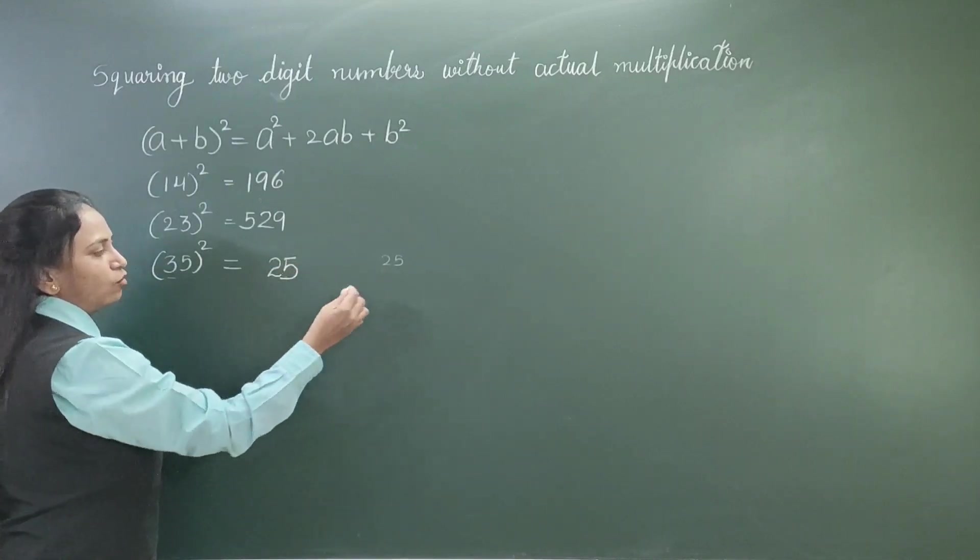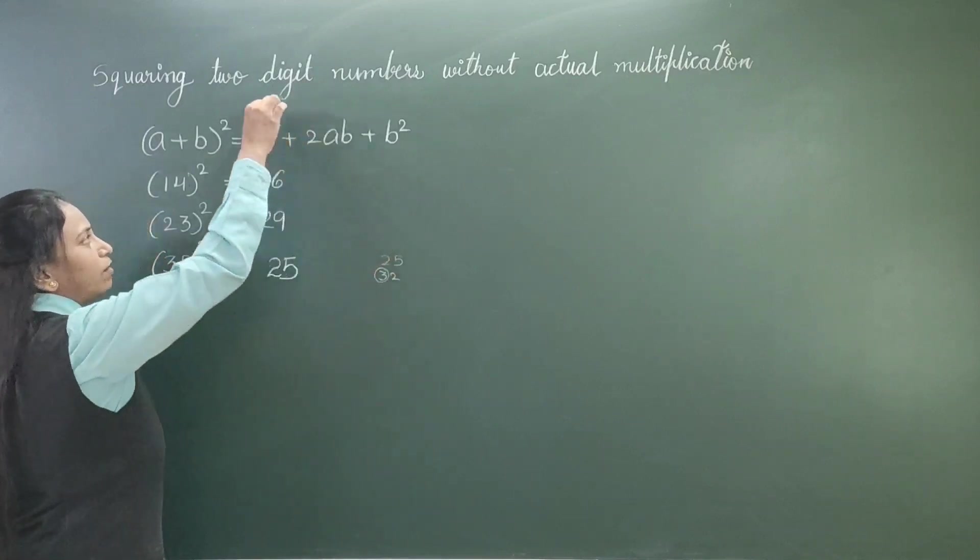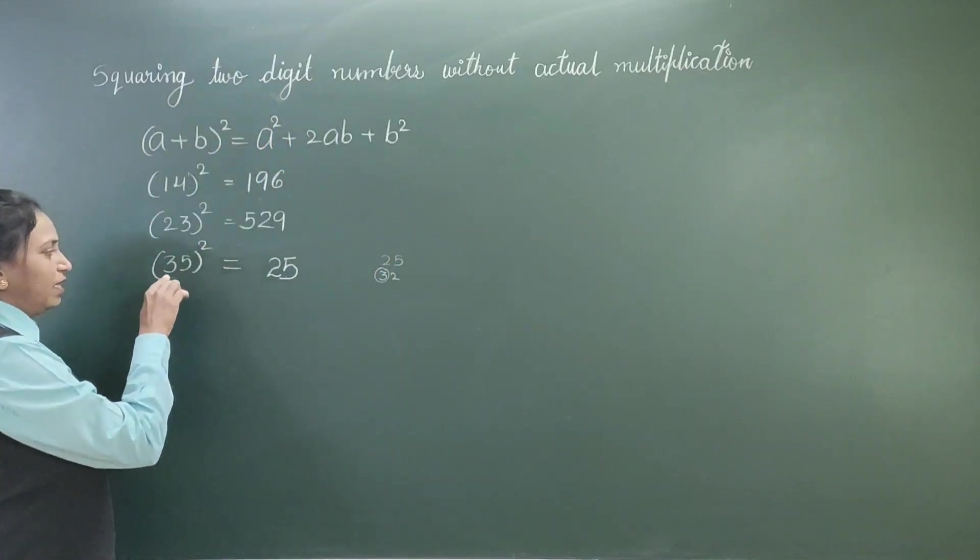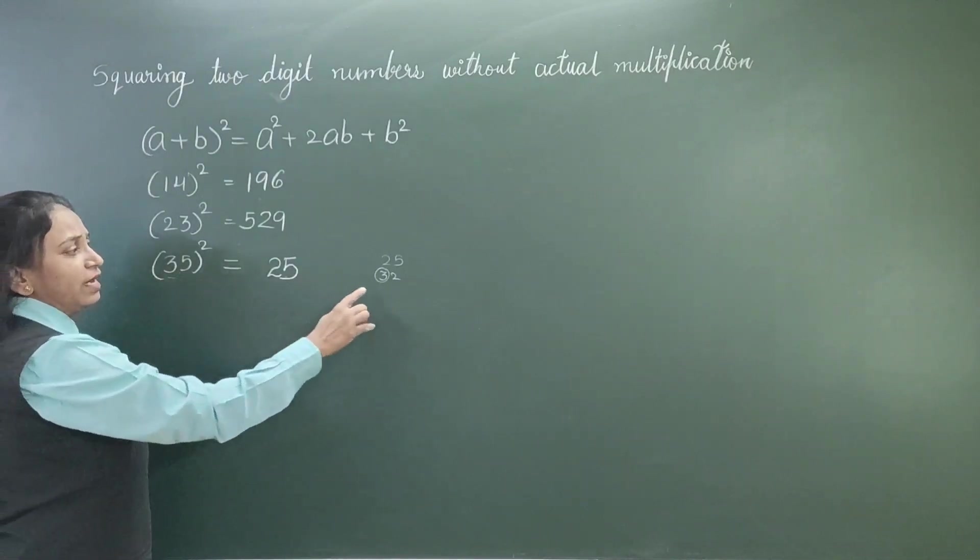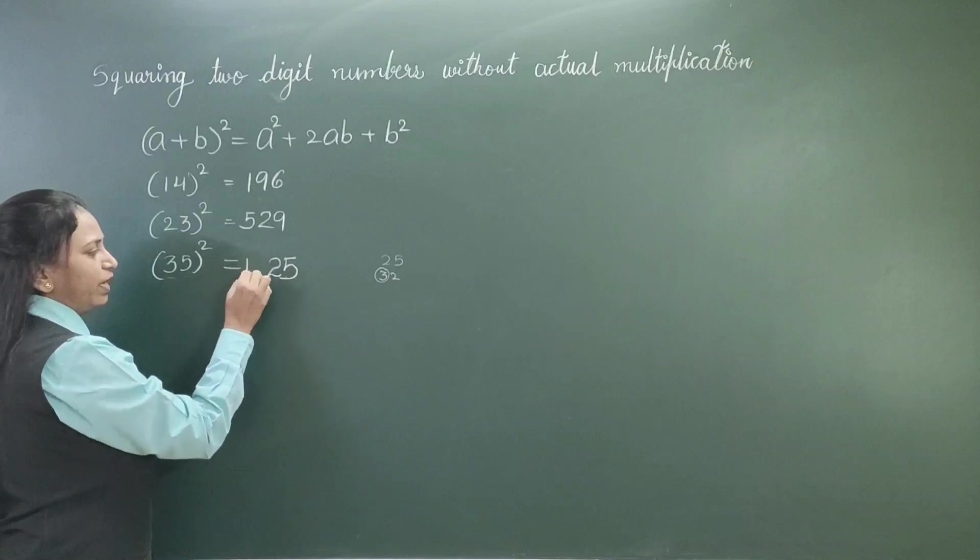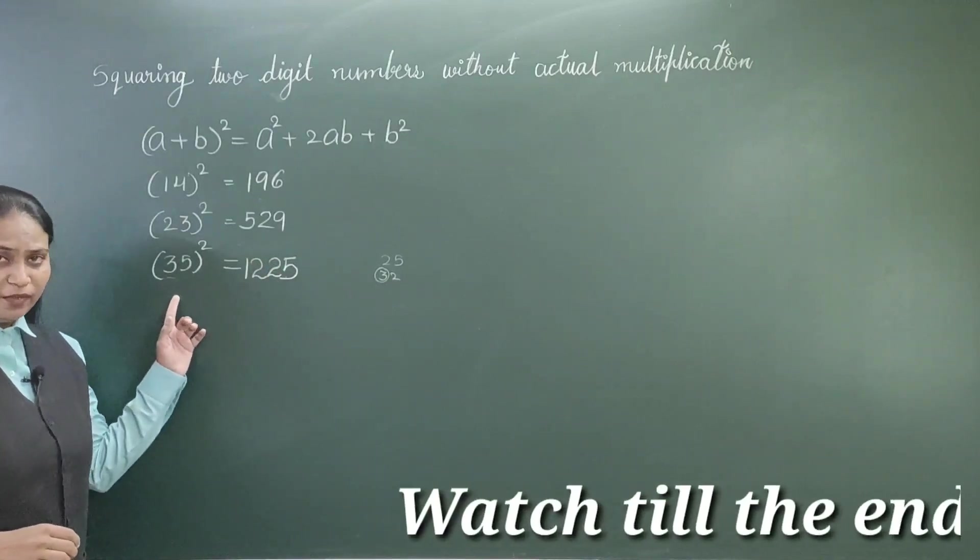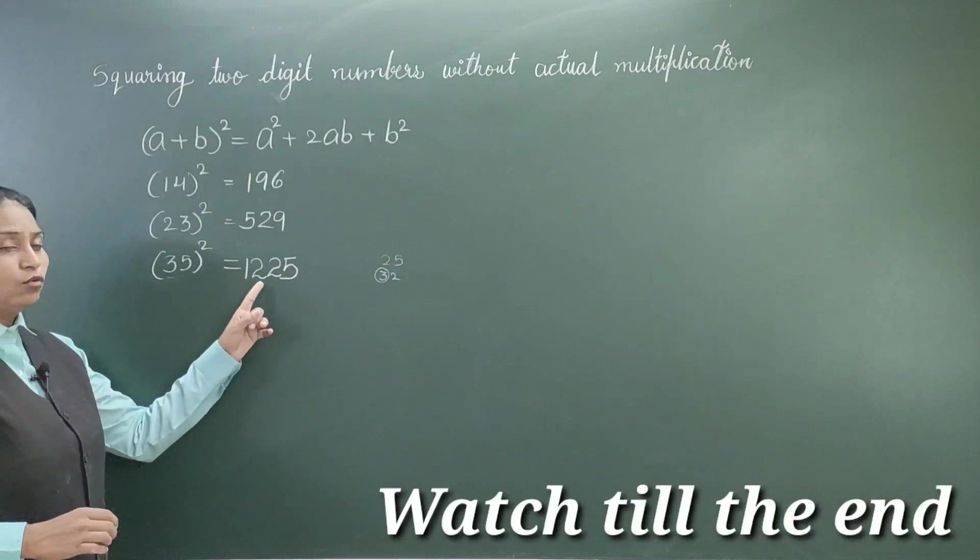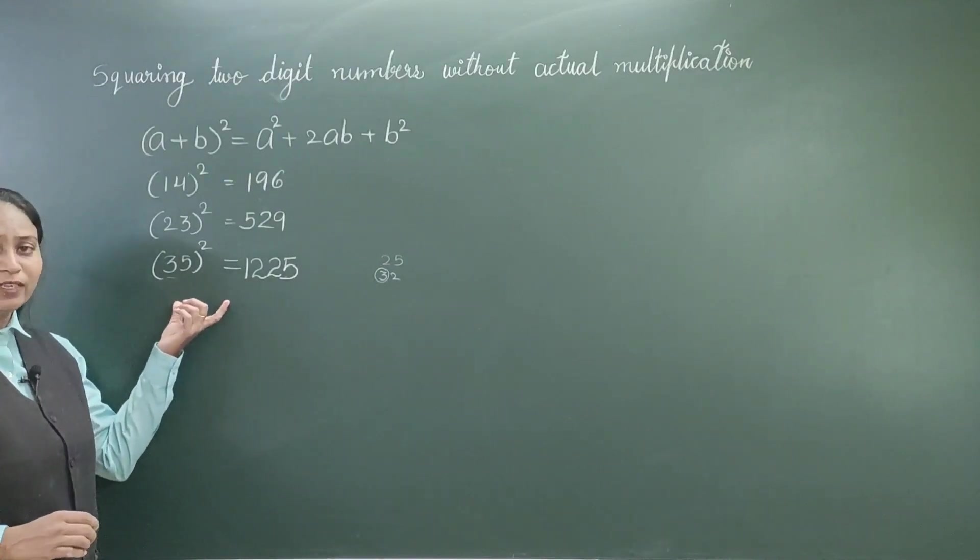Again, we will write 2 out of 32. And this 3 will be carried forward to the first digit square. That is square of 3. Square of 3 is 9, 9 + 3 = 12. So, square of 35 is 1225. This also you can verify by doing actual multiplication.